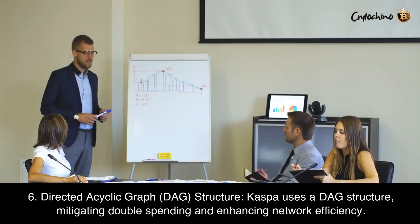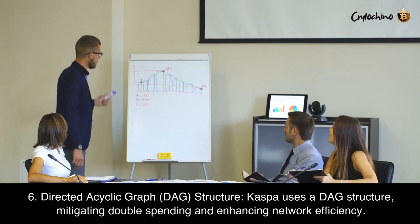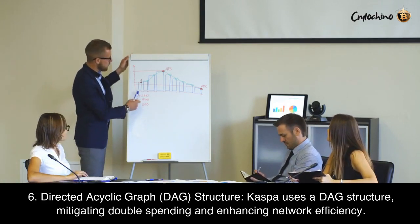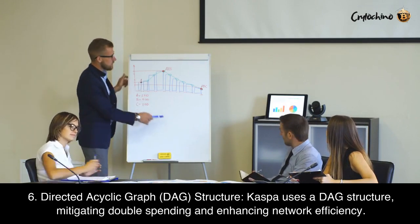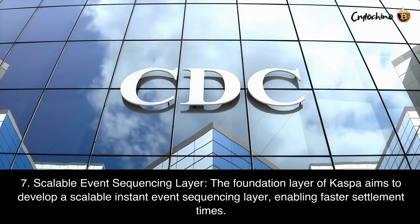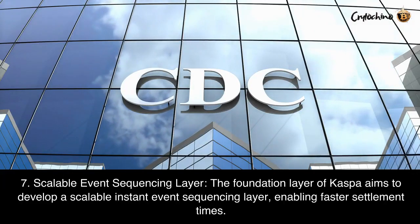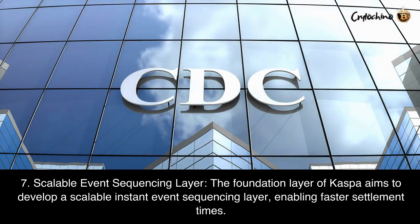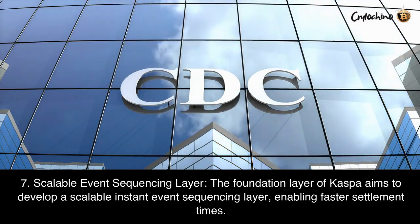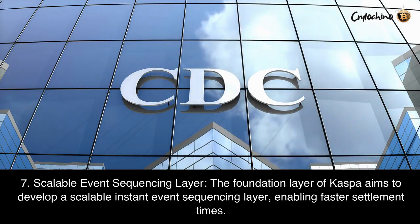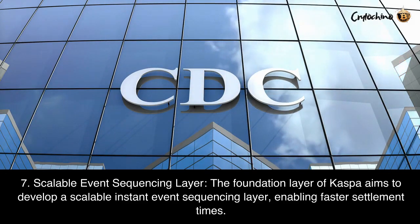6. Directed acyclic graph (DAG) structure — KASPA uses a DAG structure, mitigating double spending and enhancing network efficiency. 7. Scalable event sequencing layer — the foundation layer of KASPA aims to develop a scalable instant event sequencing layer, enabling faster settlement times.